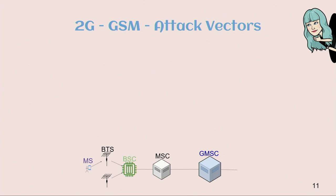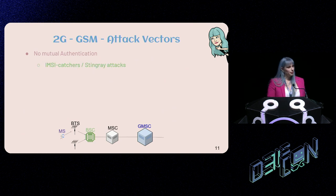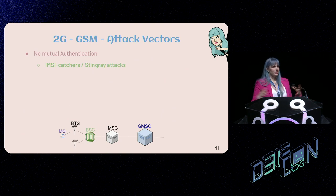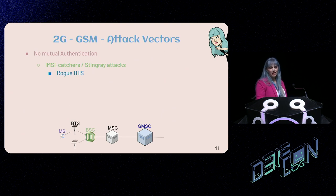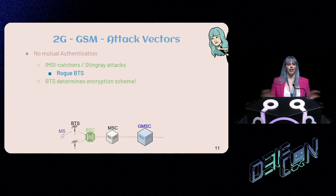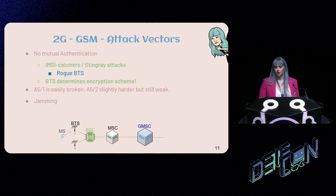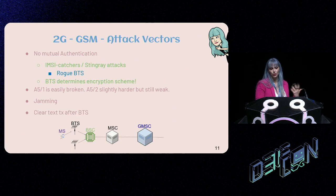Now we have the basics established — let's talk about attacks. GSM does not have mutual authentication. You've probably heard of IMSI catchers — there are lots of things you can do with them, most importantly a full person-in-the-middle attack, done by means of a rogue base transceiver station. Fun fact: the base transceiver station determines the encryption scheme, so it can say JK, don't use any encryption. And everything beyond the base transceiver station is actually sent in clear text anyway. There are also jamming attacks and known weak encryption schemes.